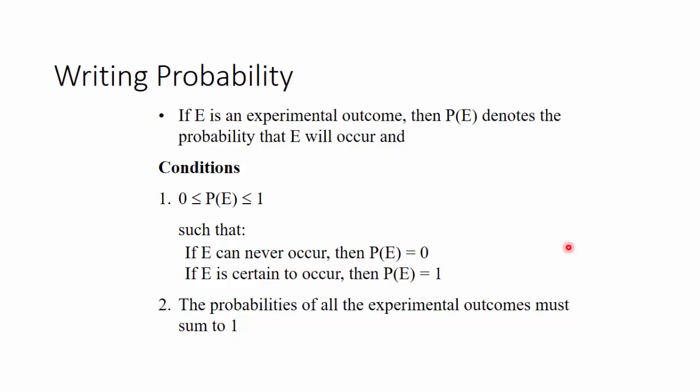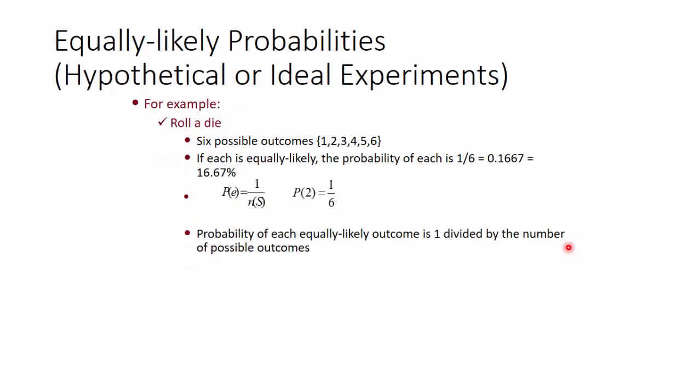We also saw some equally likely probabilities: rolling a die. There are six possible outcomes. Now what's the probability I get a 2? 2 happens only once, and that's 1 over total outcomes of 6. So that's 0.1667, about 16.67%.